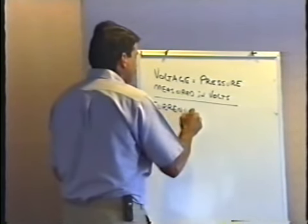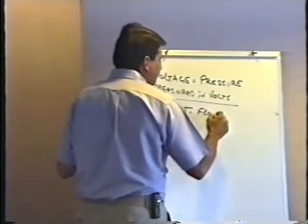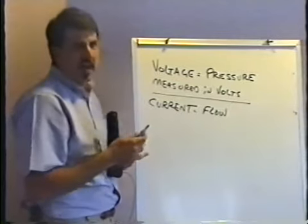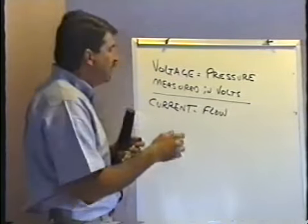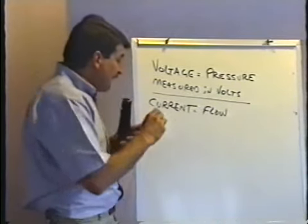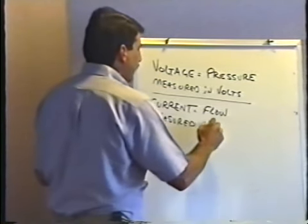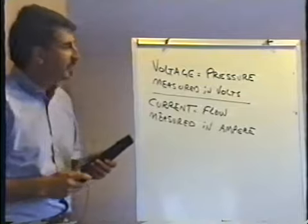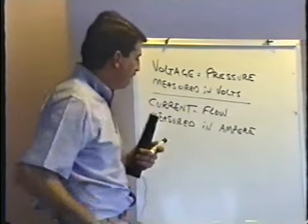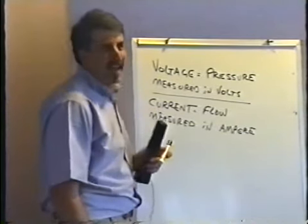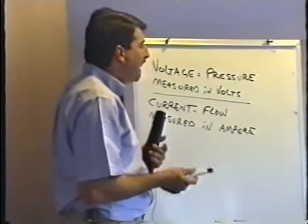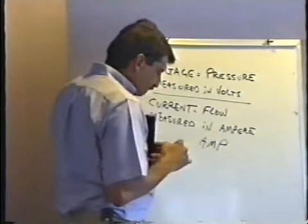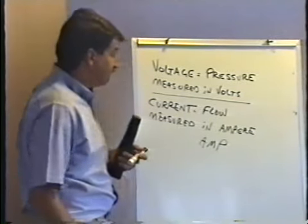The next term is current. Current is defined as the flow of electricity — just like current in a river is the flow of water, so too the flow of electricity is called current. Our unit of current is the ampere, A-M-P-E-R-E — named after Andre Ampere. Nobody says 'amperes' though — everybody just says 'amps.' Current is measured in amps.